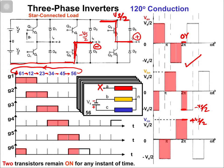These quasi-square phase voltage waveforms can be obtained with these switching pulses. Only two phases are contributing at any instant of time and one phase is out — so we are not utilizing the DC source fully or providing full power to the load.